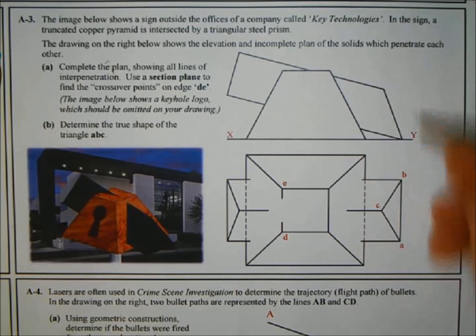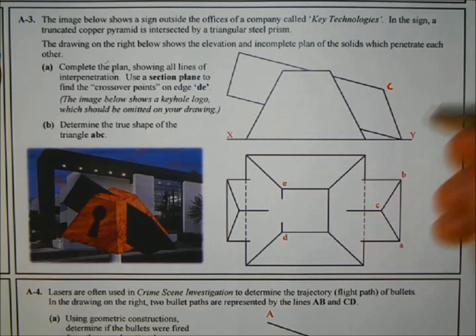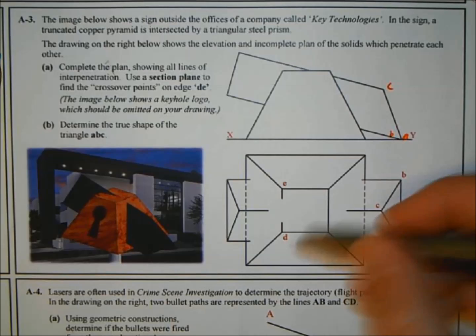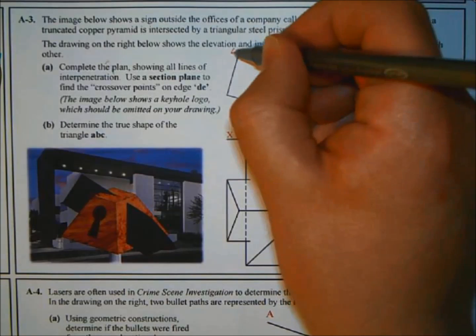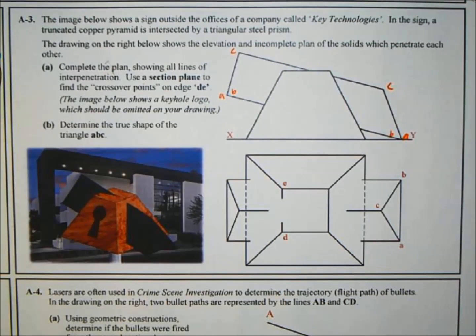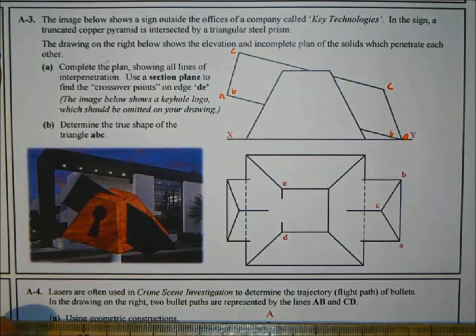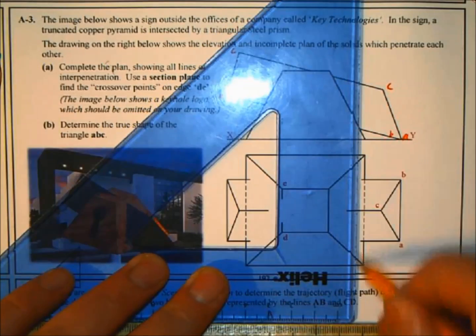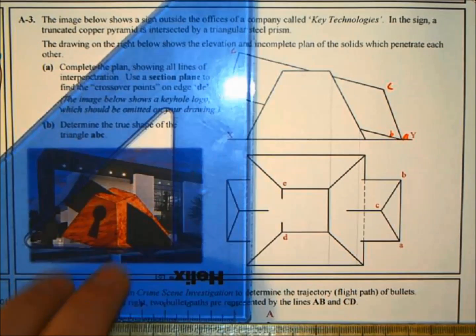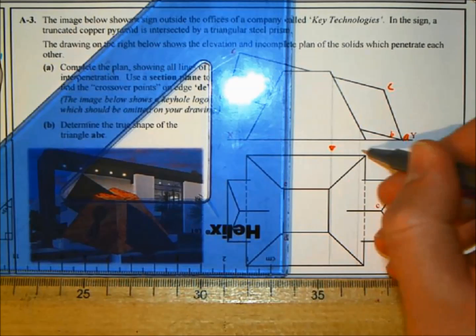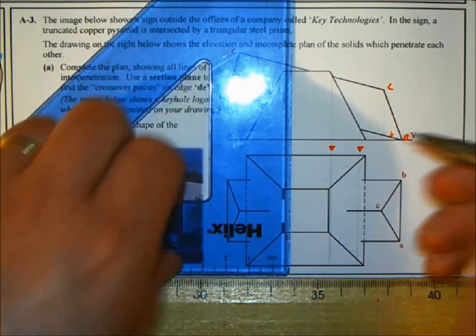Let's continue the labeling. This is point C and this is point B at the back, A at the front. Same on the far side: C, B, and A. If we project down where the points end on that flat surface, we can find where they end in plan. By projecting these straight down, I can find where they end in plan.